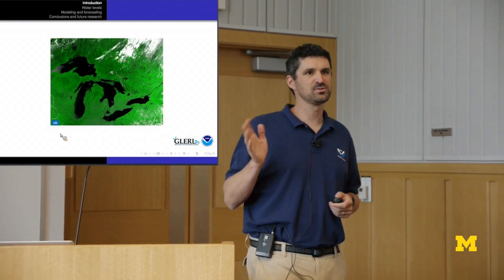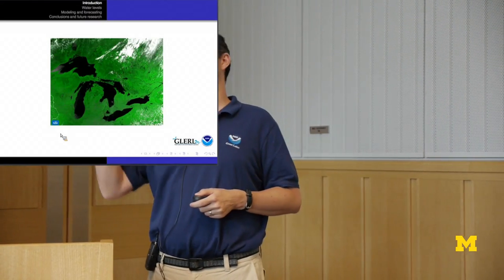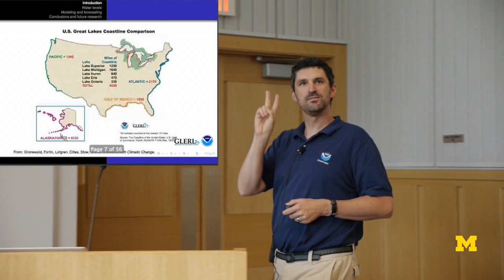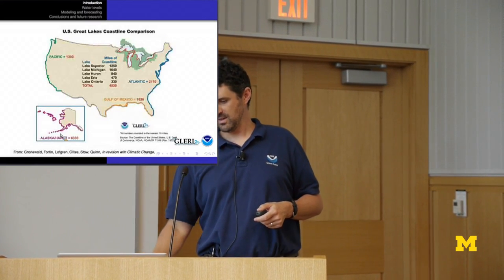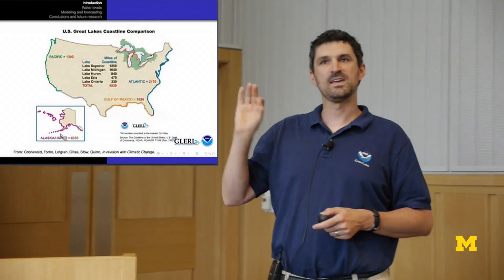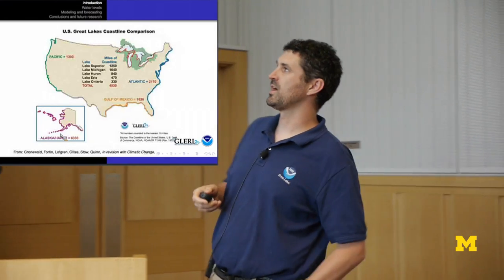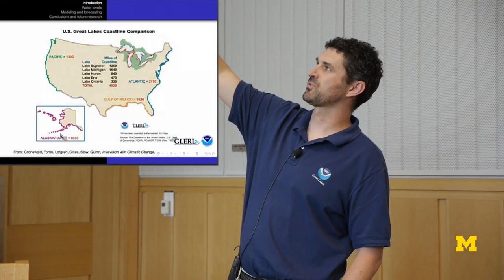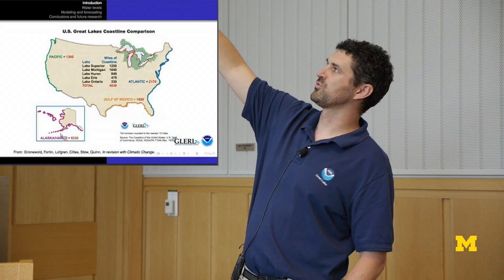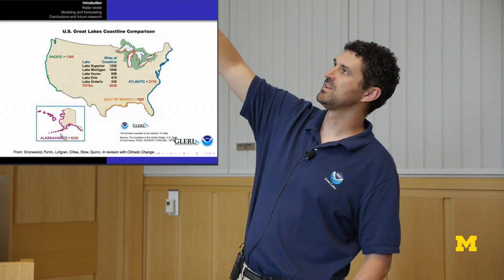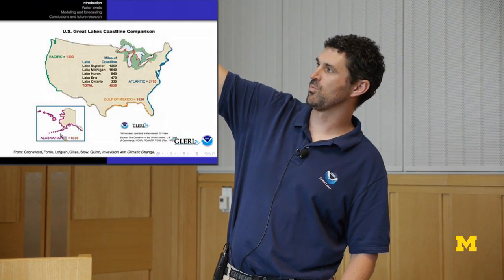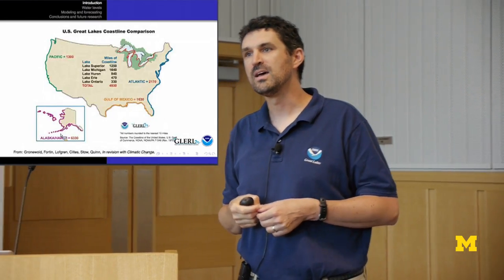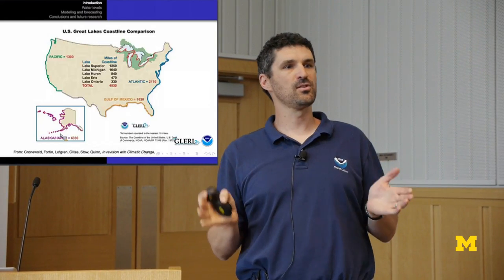Those of us who live here in the Great Lakes region recognize a broad range of features. They're known for beauty, they're sources of drinking water, and close to 40 million people live in the basin. One key feature is that they have a massive coastline. If you look at this image summarizing the length of coastline of major U.S. coastlines, the Great Lakes has one of the longest. The total U.S. miles of coastline is 4,500 miles — the Atlantic around 2,200, the Gulf of Mexico around 1,600, and the Pacific roughly 1,500. Only Alaska has more, at over 6,300 miles.